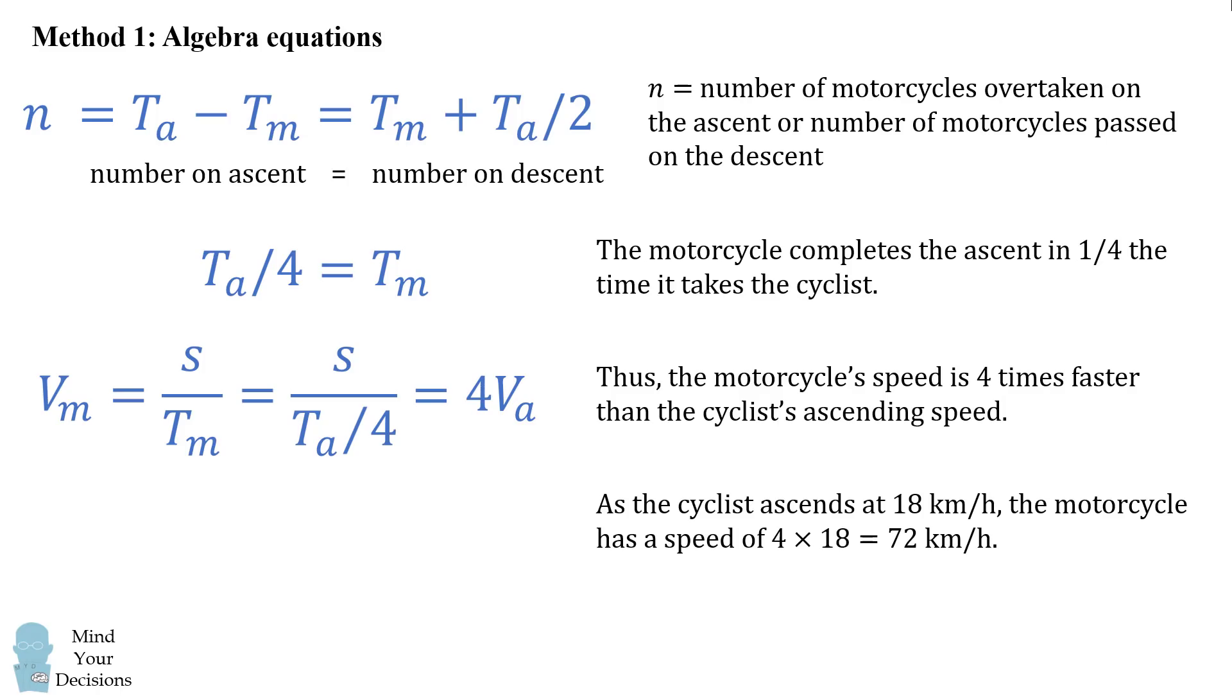Therefore, since the cyclist ascends at 18 km per hour, the motorcycle has a speed of 4 times 18, which is 72 km per hour. And like magic, we've solved for the answer without knowing the exact number of motorcycles and without knowing the elevation of the climb. So this is one way to solve the problem.